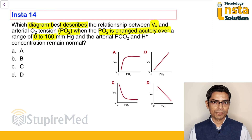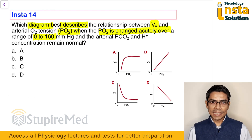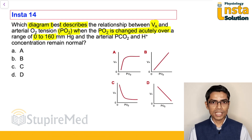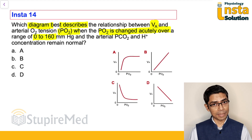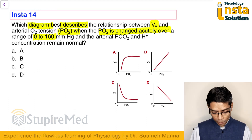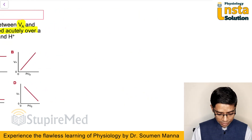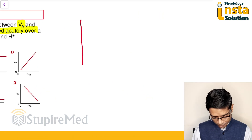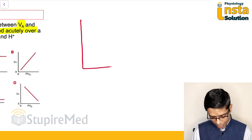If we decrease the oxygen, that means there is production of hypoxia, and we know hypoxia is a stimulus for peripheral chemoreceptors. But if you plot the curve between this decrease in oxygen and ventilation, it will look like this.